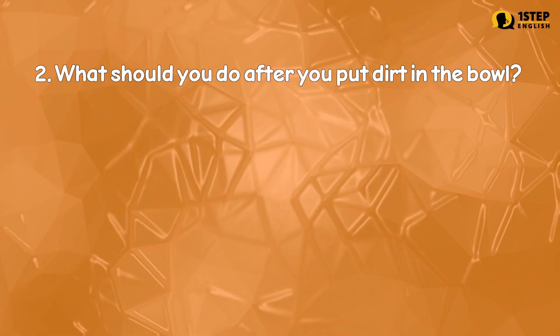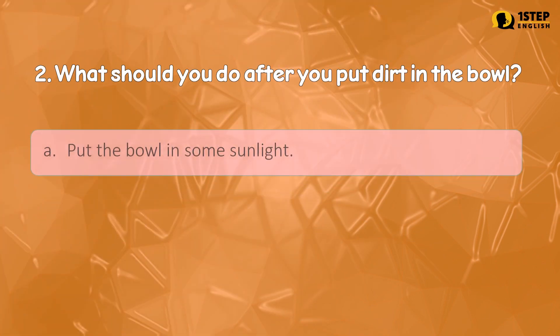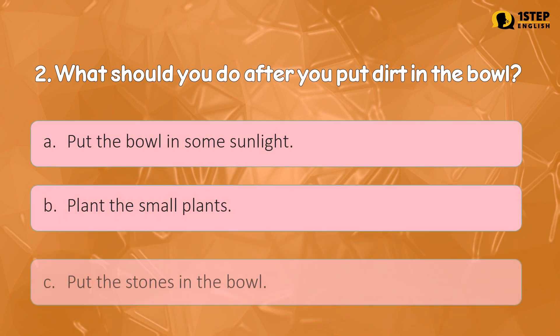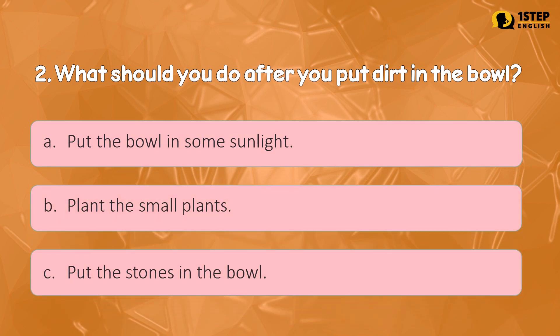Number two: what should you do after you put dirt in the bowl? Letter A: put the bowl in some sunlight. Letter B: plant the small plants. Letter C: put the stones in the bowl. The correct answer is Letter C — put the stones in the bowl.